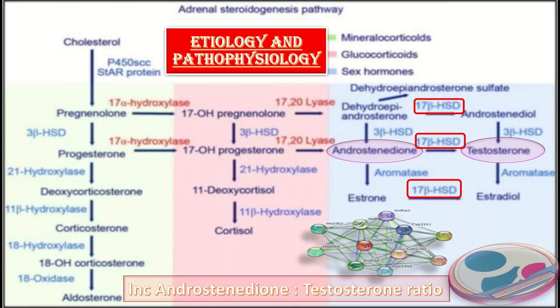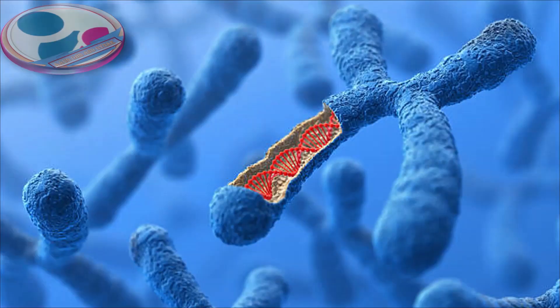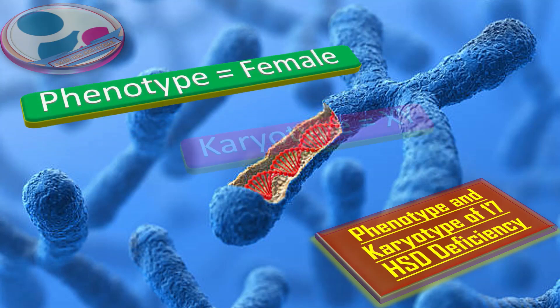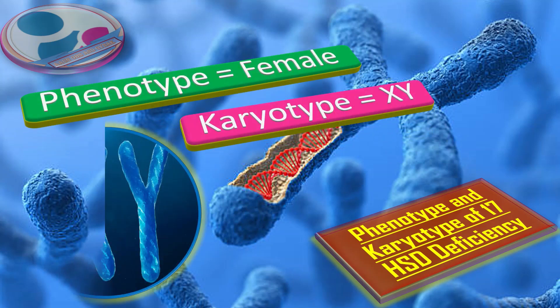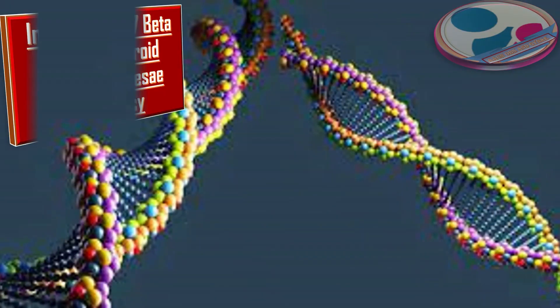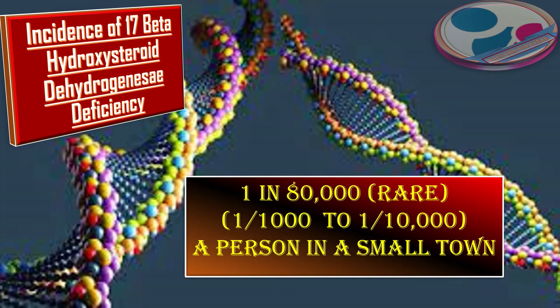So its deficiency will result in a decreased amount of testosterone. The phenotype of 17-beta-hydroxysteroid dehydrogenase deficiency is female, and the karyotype is 46XY. The incidence is 1 in 80,000 people, meaning it is a rare disorder.